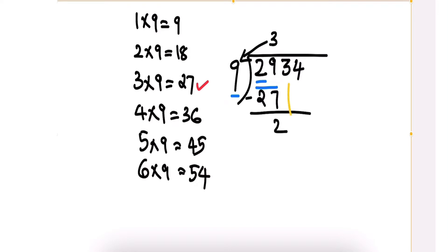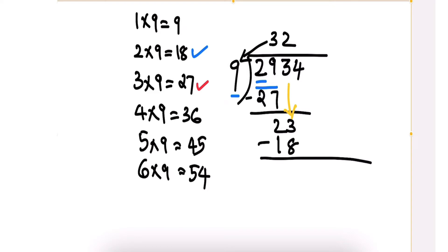Bring down the 3. Our number of consideration is now 23. Use the multiplication table of 9 again: 2×9=18, 3×9=27. Since 27 exceeds 23, take the previous: 2×9=18. Write 2 in the quotient. 2 into 9 is 18. Subtract: we get 5.